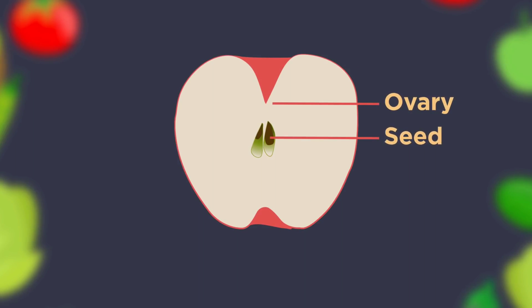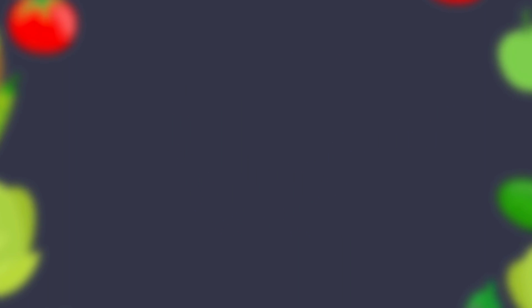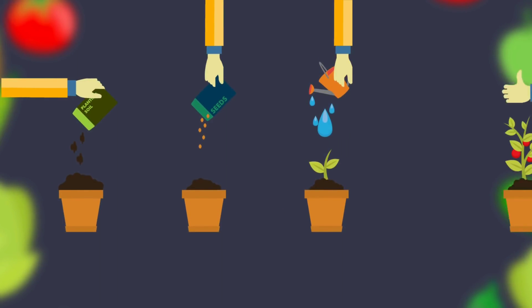Surrounding the internal seeds, the fruit and seeds are dispersed in many ways, some even by humans, where they will again grow into a new plant under the correct conditions, completing the long cycle of sexual reproduction in plants.